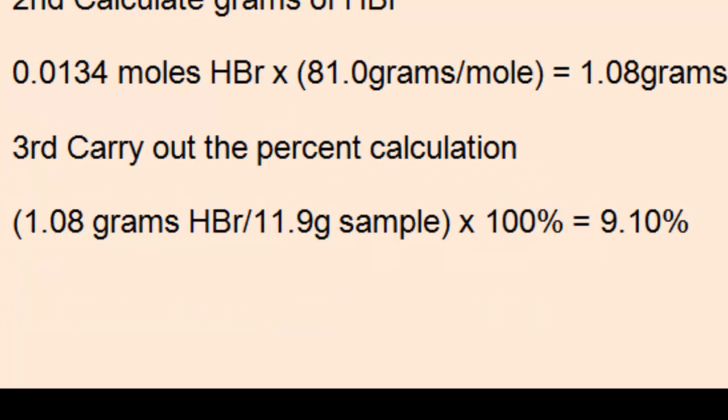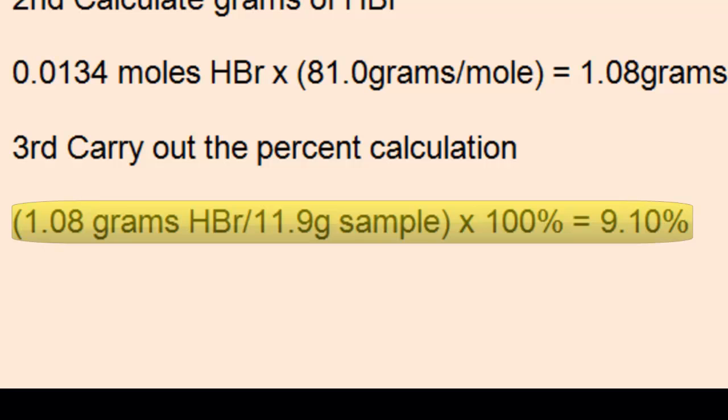Finally, carry out the percent calculation proposed earlier. Divide 1.08 grams of HBr by the 11.9 gram sample and multiply by 100% to get 9.10%.